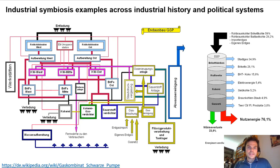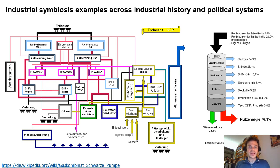Interestingly, industrial symbiosis is not only a Western example — it can be found across industrial history and across political systems. One example from former Eastern Germany shows how lignite was used to produce not only electricity, but also tar, gas, briquettes for domestic heating and other energy carriers used in subsequent industries. With these combined plants, the overall energy efficiency of the process could be increased to 76%, whereas individual plants alone typically would have an efficiency of only 30 to 40%. This example is about 60 years old.